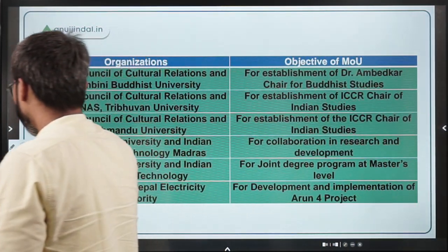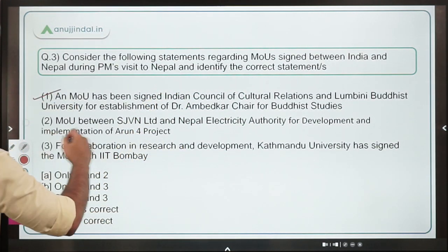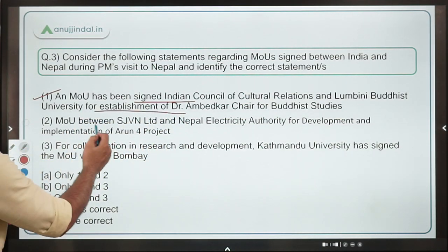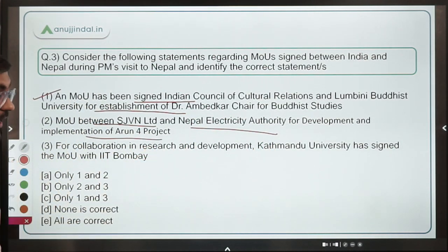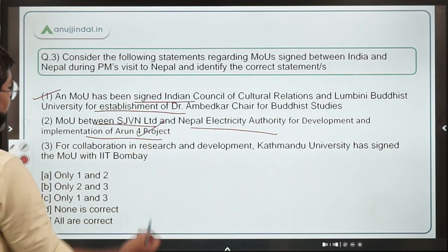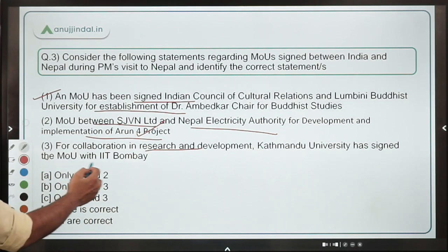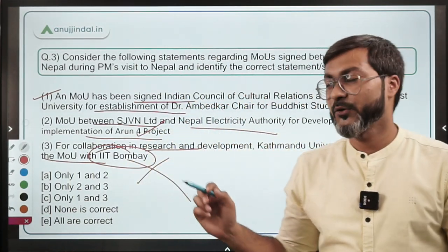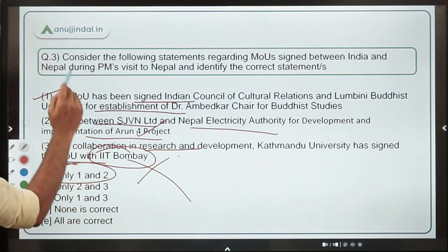Identifying the correct statements: an MOU was signed between ICCR and Lumbini Buddhist University for establishment of Dr. Ambedkar Chair — this is correct. An MOU between SJVN Limited and Nepal Electricity Authority for development of Arun-4 — this is also correct. However, the statement that Kathmandu University signed an MOU with IIT Bombay for research collaboration is incorrect — it was IIT Madras. Therefore, option A (only statements one and two) is the correct answer.